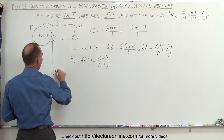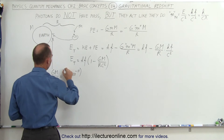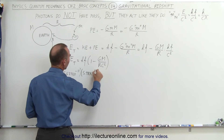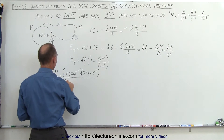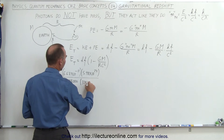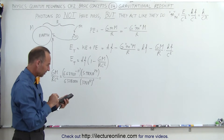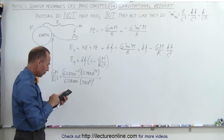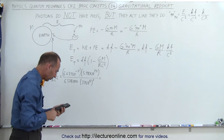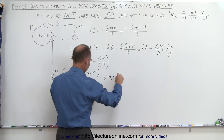At the earth's surface, GM over rc squared equals 6.67 × 10⁻¹¹ times 5.98 × 10²⁴ (the mass of the earth), divided by 6,378,000 meters (the radius of the earth), times (3 × 10⁸)² (speed of light squared). Computing that gives 6.95 × 10⁻¹⁰.